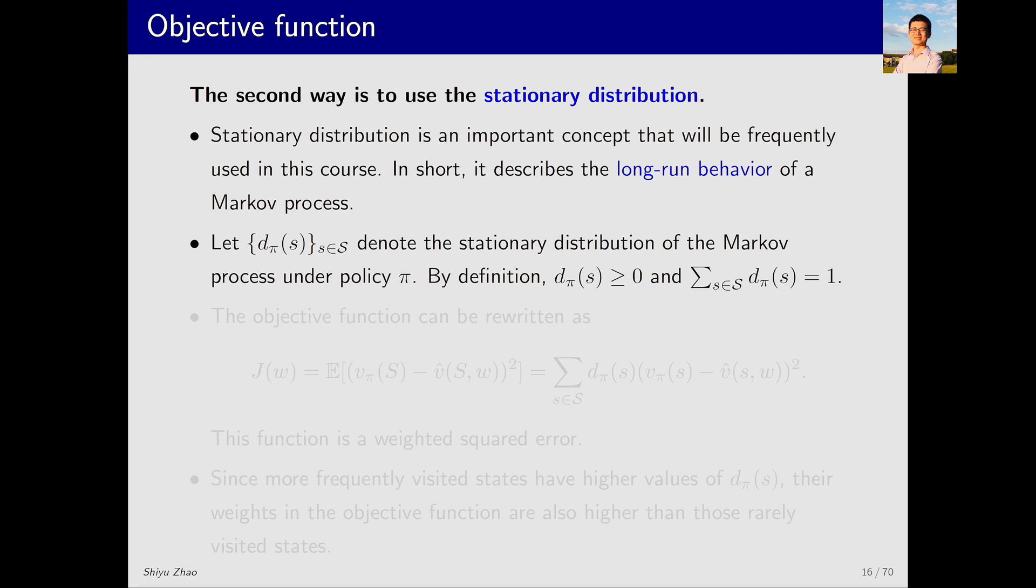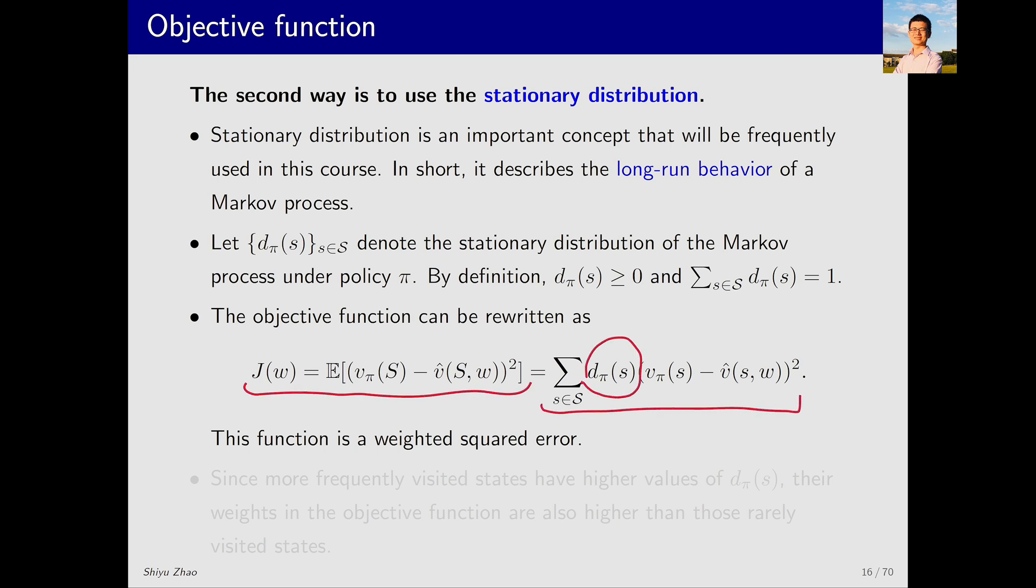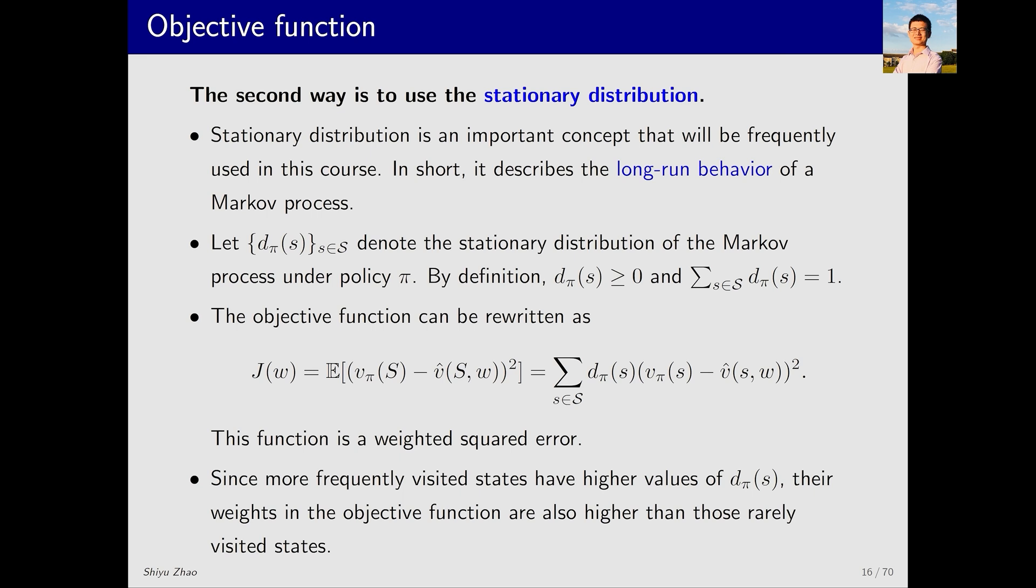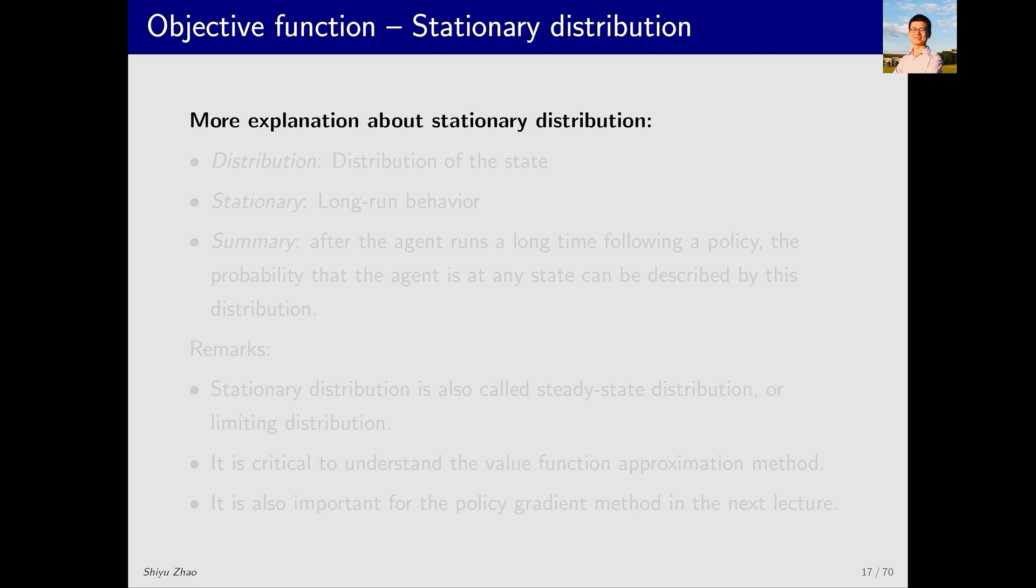For now we just need to know it is a probability distribution, and I denote it by d_π. d_π(s) is the probability at state s. Since it is a probability distribution, the probability at each state s must be greater than or equal to 0, and the sum of all probabilities should equal 1. In this context, based on the definition of expectation, the objective function can then be written in this form. Here, d_π essentially acts as a weighting factor. If a certain state has a larger weight, then the estimation error for that state will be smaller. Another implication of d_π is that it represents the probability of the agent appearing in that state after reaching a stationary status.